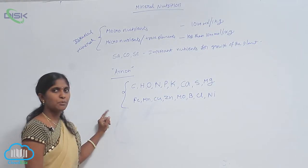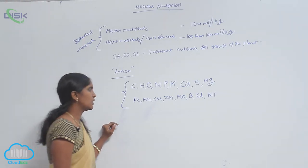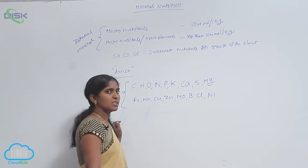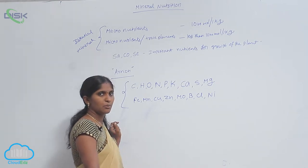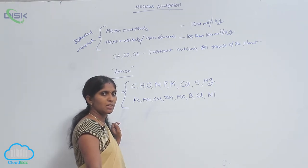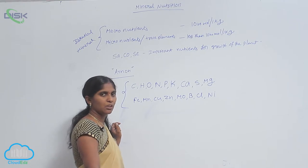The essential nutrients are of two types: macronutrients and micronutrients. Macronutrients' concentration is higher than micronutrients, but both are required for the growth and development of the plant.